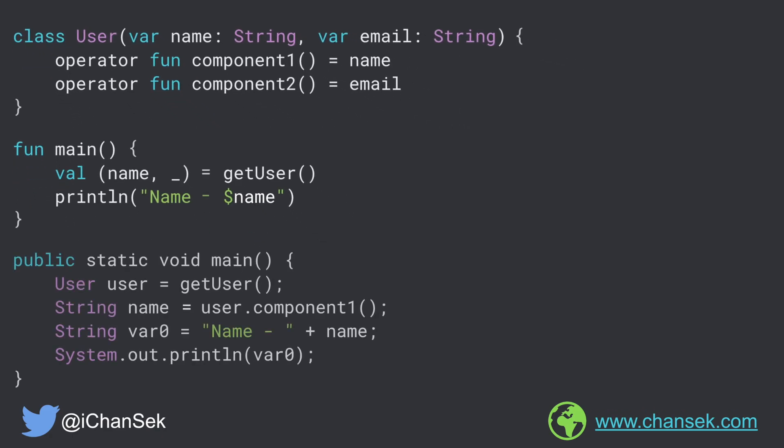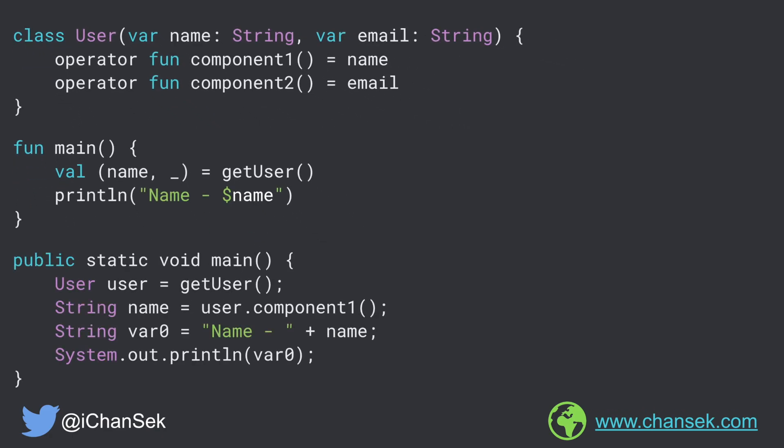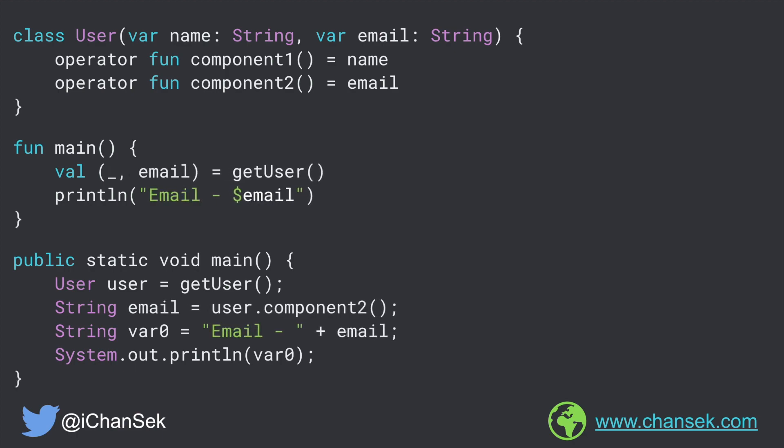Under the hood it looks something like this — notice that there is no user.component2 function call. In this particular example, whether you use email or skip it through underscore doesn't make much of a difference, because component2 simply returns the email property of the User class. But imagine we have a component2 function which does some heavy operation — in those cases we should definitely use underscore instead of an unused variable name. Moving forward, we can also skip the earlier variables and use only the later variables. In this case we need only email, so we are not going to use the component1 function.